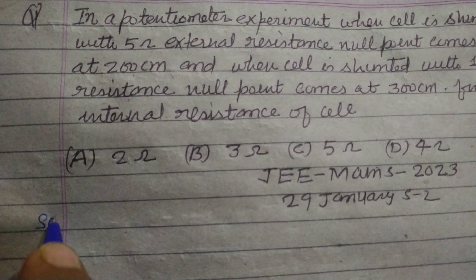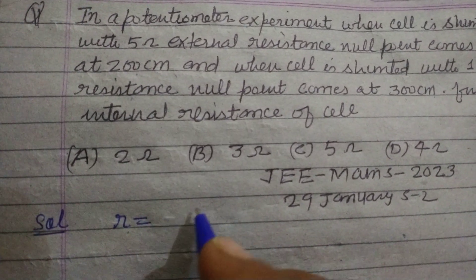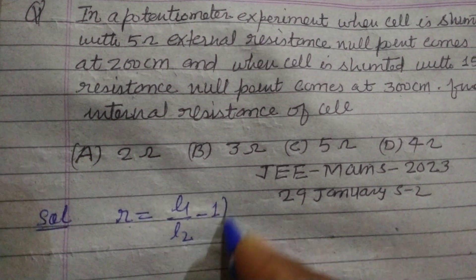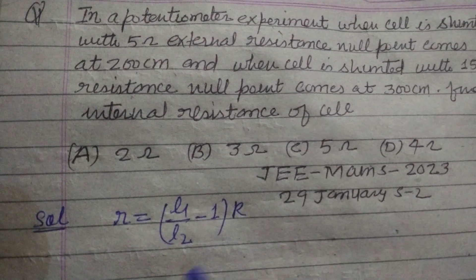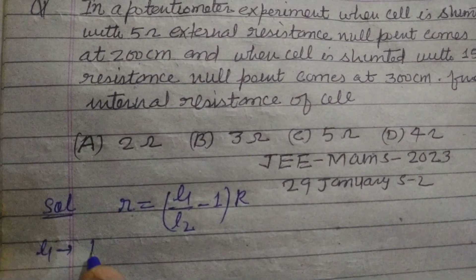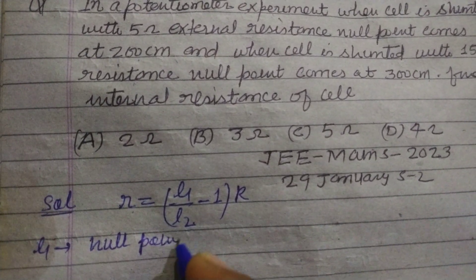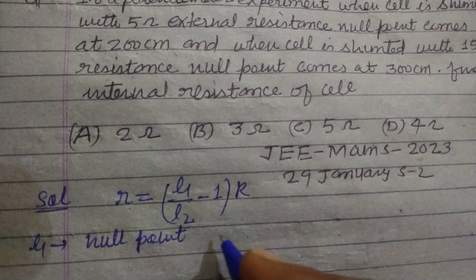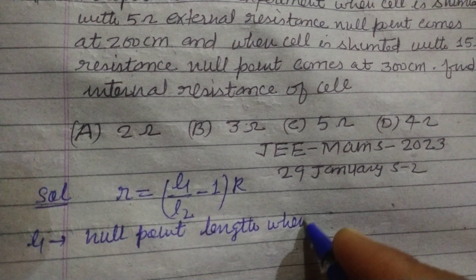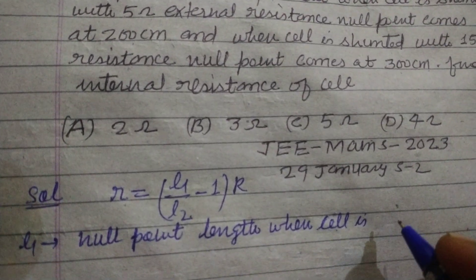So students, here we have internal resistance R = (L1/L2 - 1) × R. Here L1 is the null point length when cell is not shunted.